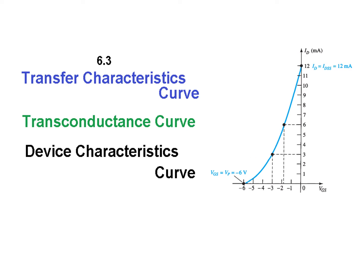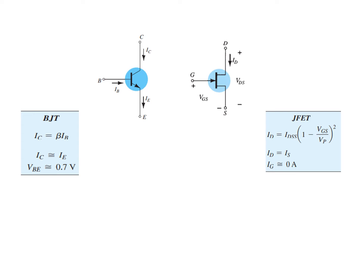Let's compare the transistor and FETs — they both have three legs. We are familiar with the BJT characteristics, but the JFET characteristics are different. The drain current ID is equal to IDSS multiplied by (1 minus VG over VP) squared. This squared term dictates the behavior of the curve, making it nonlinear.